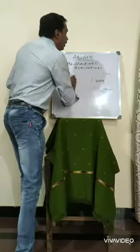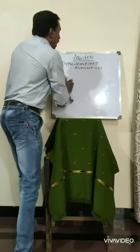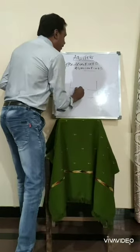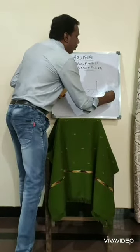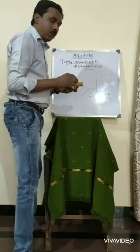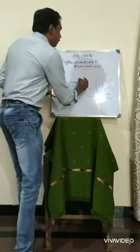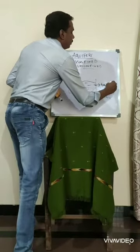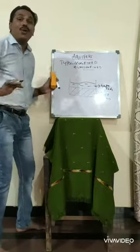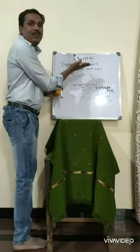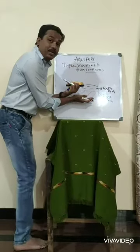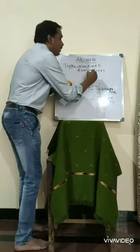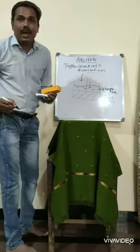So what do you mean by unconfined aquifer? Again there is a rock layer beneath, and here there is a water body. But above the water there is no rock layer, so it is unconfined — it is not being confined. Beneath the surface there will be a rock layer and above that the water will be present. This is called an unconfined aquifer.